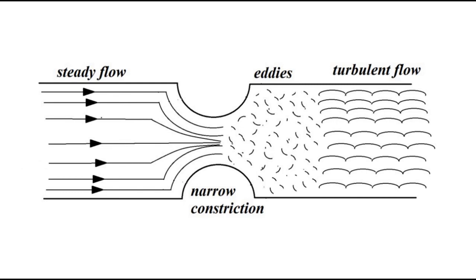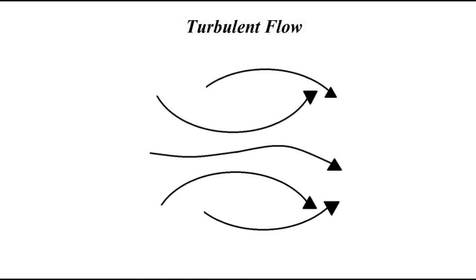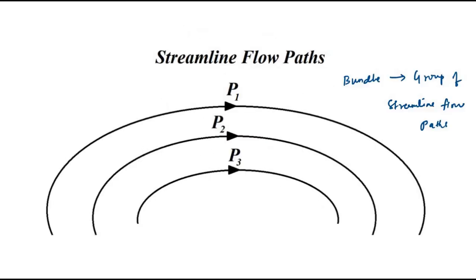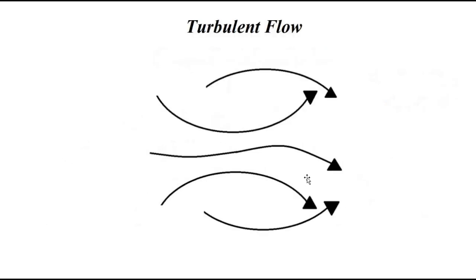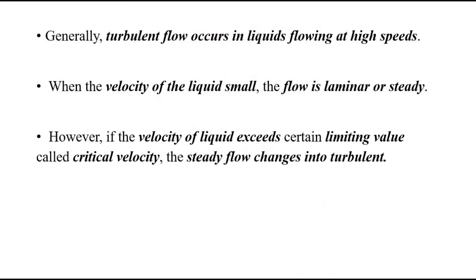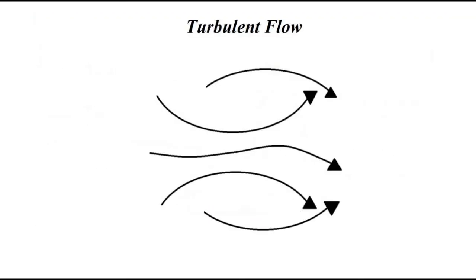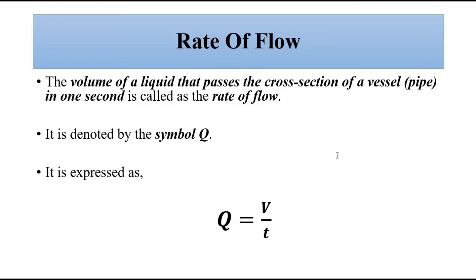Steady flow or streamline flow is well-organized in well-defined paths, while turbulent flow is just the opposite. There is another important parameter called critical velocity, which we will discuss in a separate video — it gives us the velocity at which streamline flow gets converted into turbulent flow. We will also discuss Reynolds numbers in a separate video.